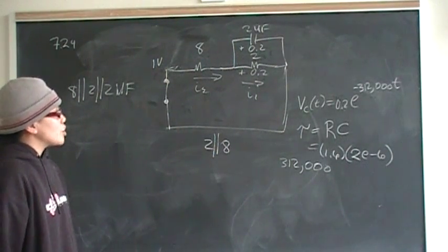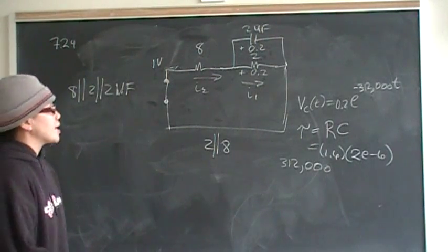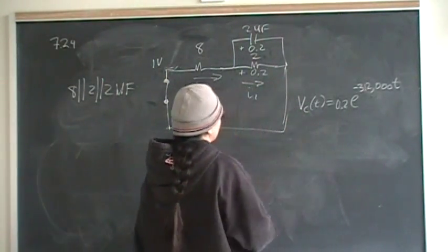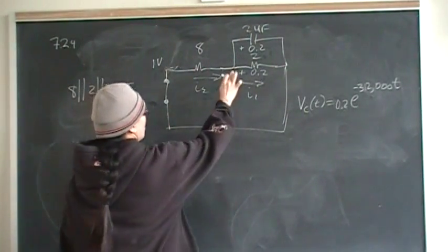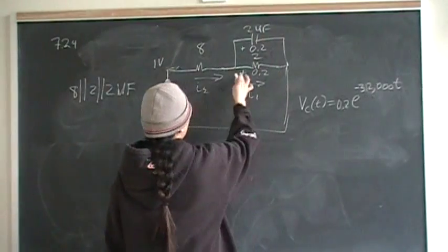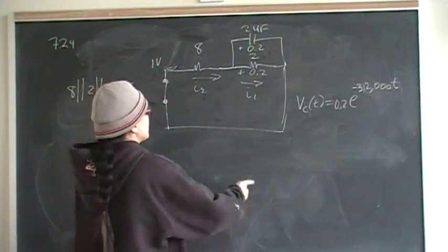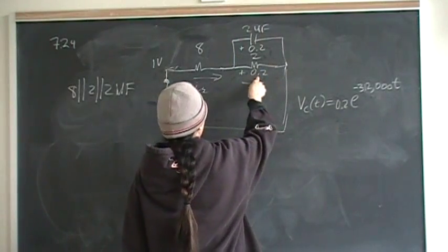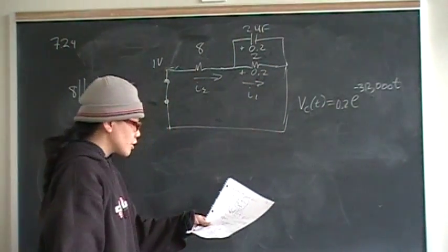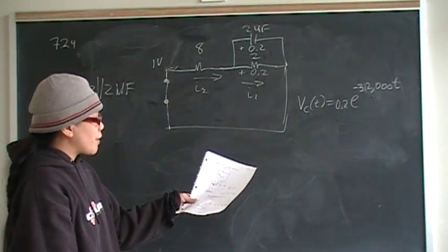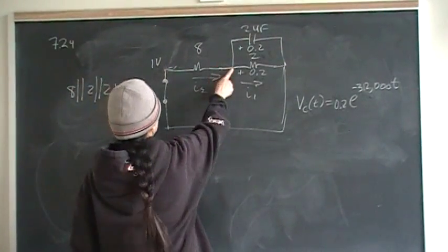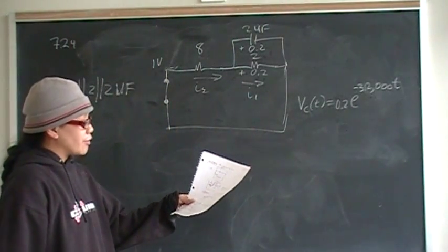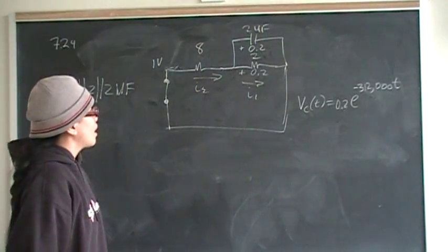If you're on a test and you get a voltage function like that, you should be happy because it matches your expectation. Now let's find I — I equals V over R, and now we have V. Since all elements are in parallel, they all have the same voltage. I1 equals V divided by 2, which gives 0.1 times E to the negative 312,000t amps. And I2 equals 0.025 times E to the negative 312,000t amps. That's the answer to this problem.